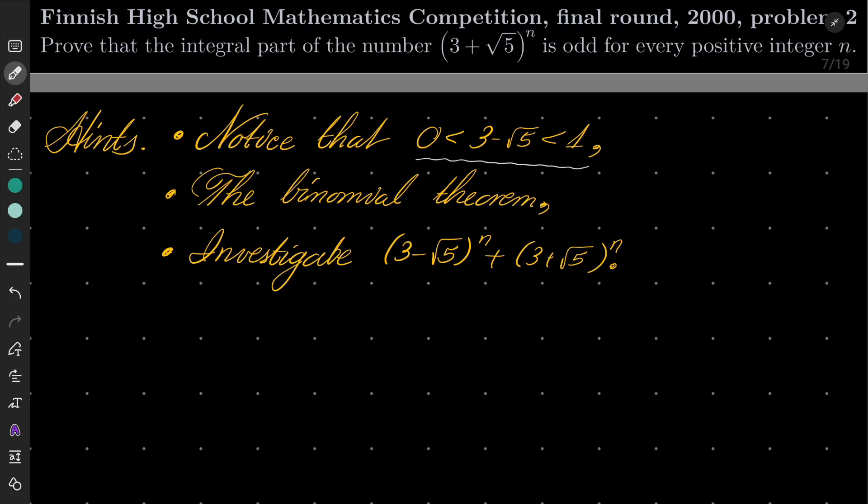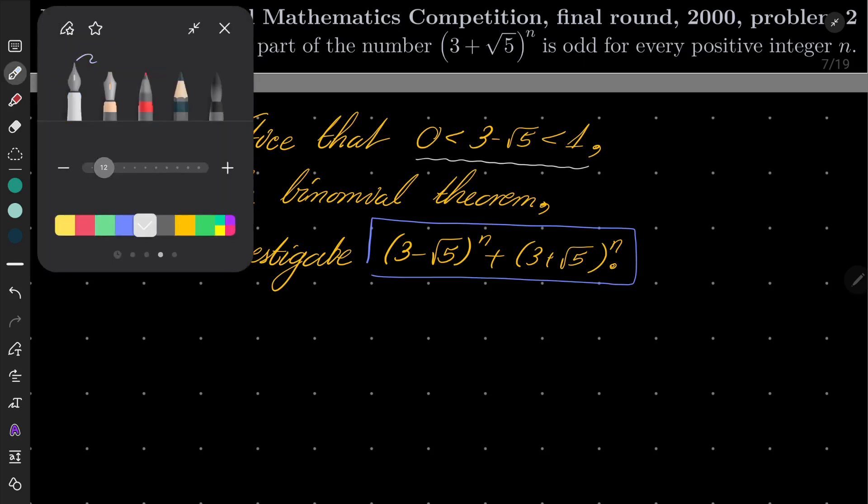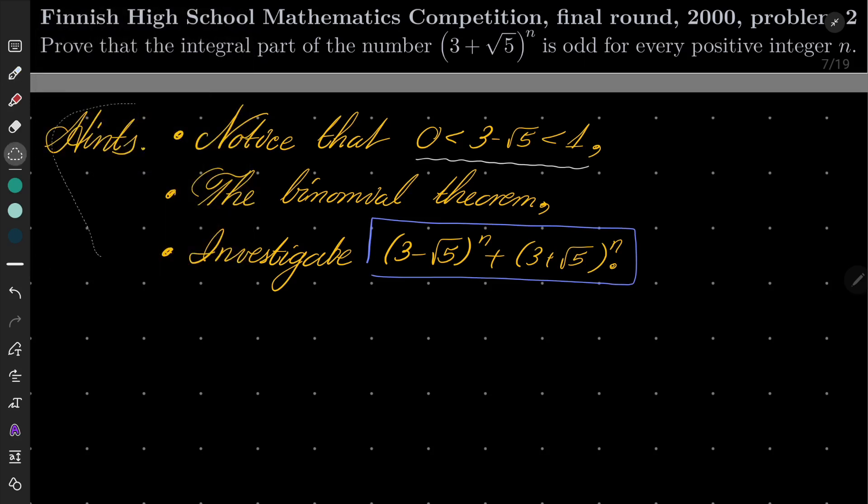Then, the binomial theorem can be very helpful. And the most important hint is to investigate this sum: (3 - √5)^n + (3 + √5)^n. It may be very helpful. Give it a try and see you in a moment.